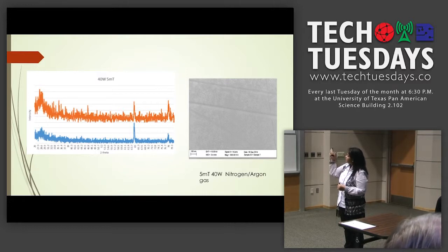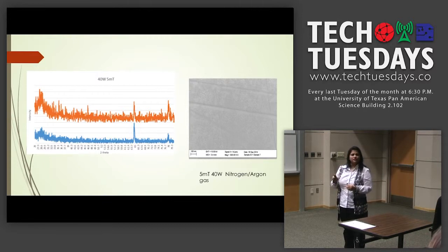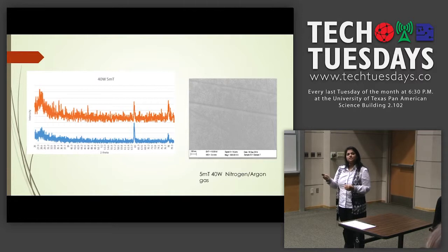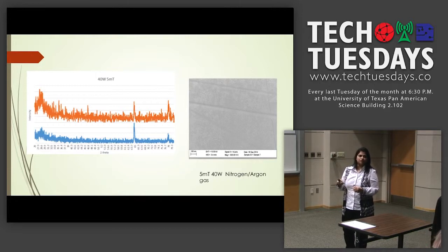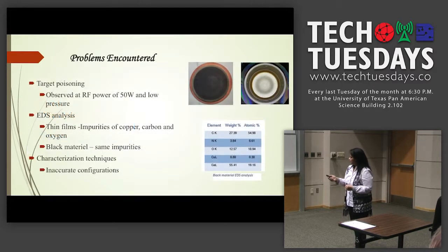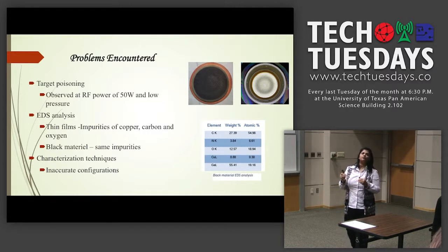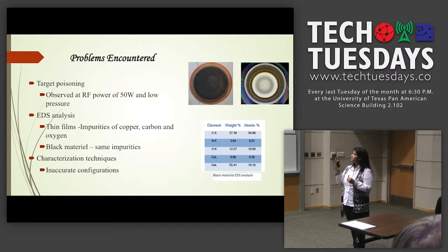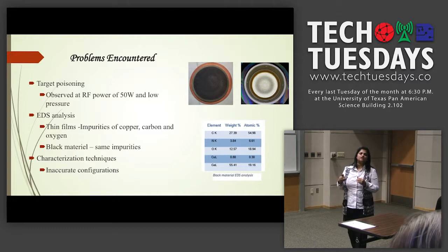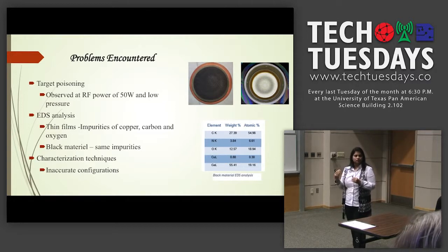The next figures show images at nanometer scale, and the surface is not uniform — we need to take precautions to improve it. One approach is increasing rotation speed, which may help achieve uniform deposition. We also observed that the two targets — one after poisoning and one after cleaning — show that if the environment is not maintained with proper parameters, we can have target poisoning.